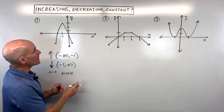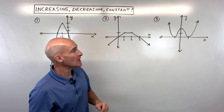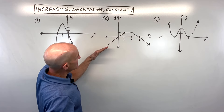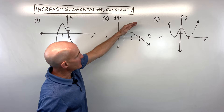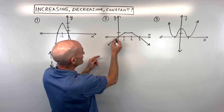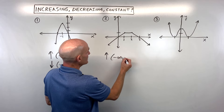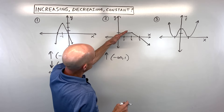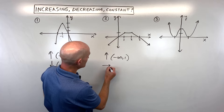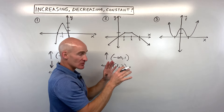Let's go to number two. Where is the graph increasing, decreasing, or constant? Reading from left to right, you can see the graph is going up to the right. For what x values are the y values increasing? That's from negative infinity to positive one — not including one, because once you get to one, we have a horizontal line. So it's going to be constant from one to two, not including the endpoints, using an open interval.